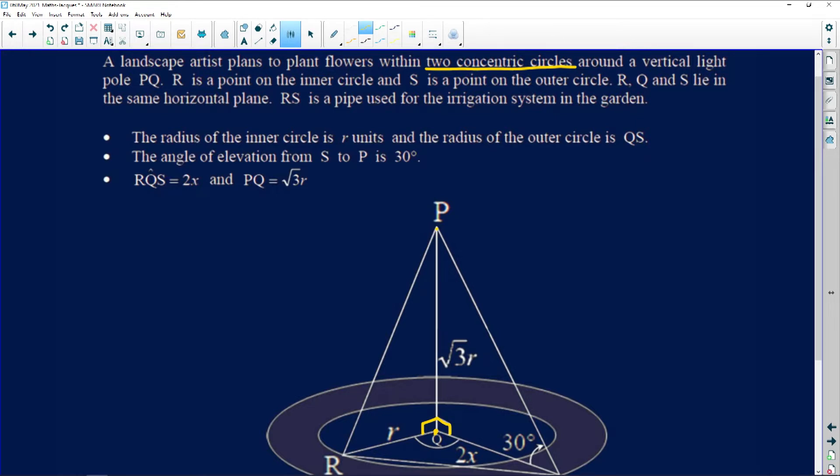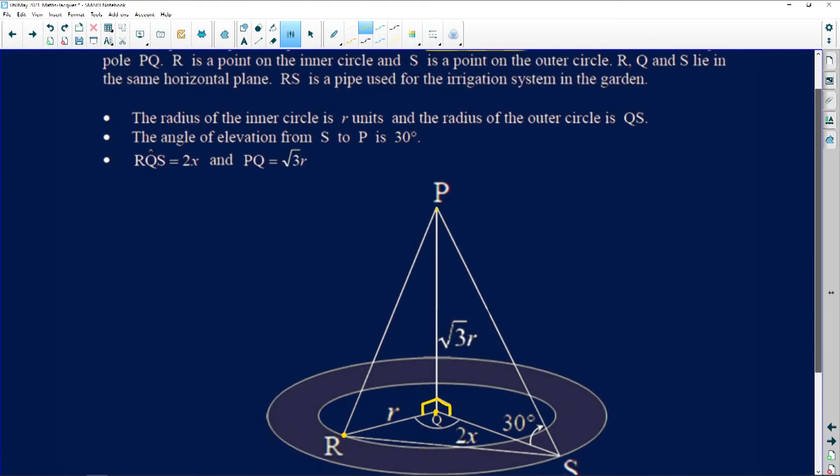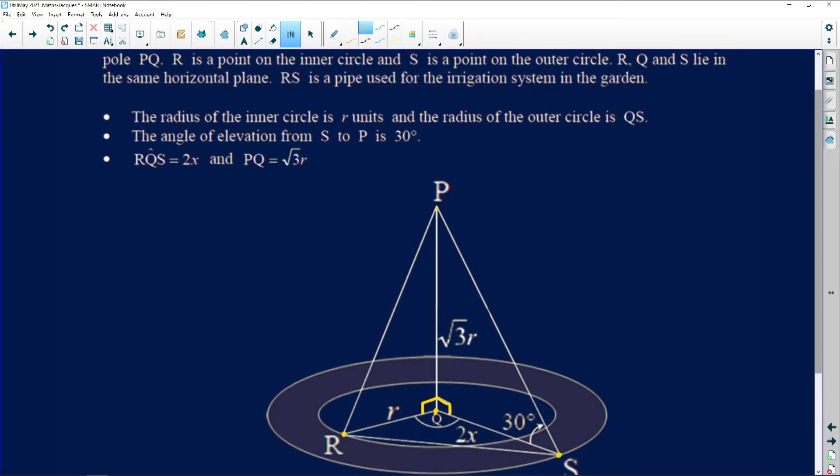R is a point on the inner circle, obviously the smallest circle. They say R is a point on that circle, and S is a point on the outer circle. You can see the shaded part here, folks. This is where your garden is going to be located. R to S, they've got a pipe that is an irrigation system for this garden.